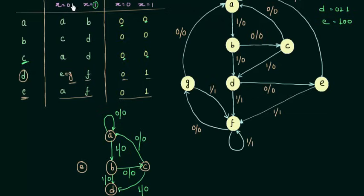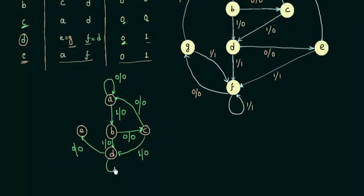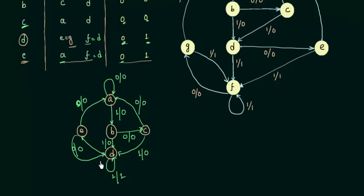When on state D with input 0 I go to E with output 0. When input is 1 I go to F, but F is equal to D, so I remain on D with output 1. When on state E with input 0 I go to A with output 0. If input is 1 I go to F, which equals D, so I go to D with output 1.